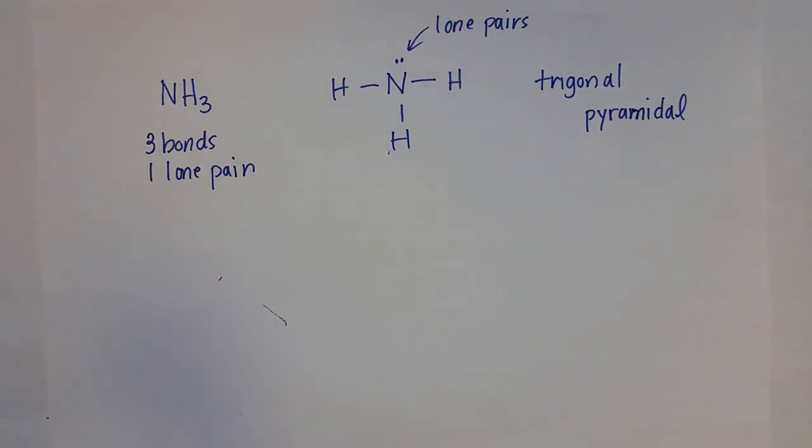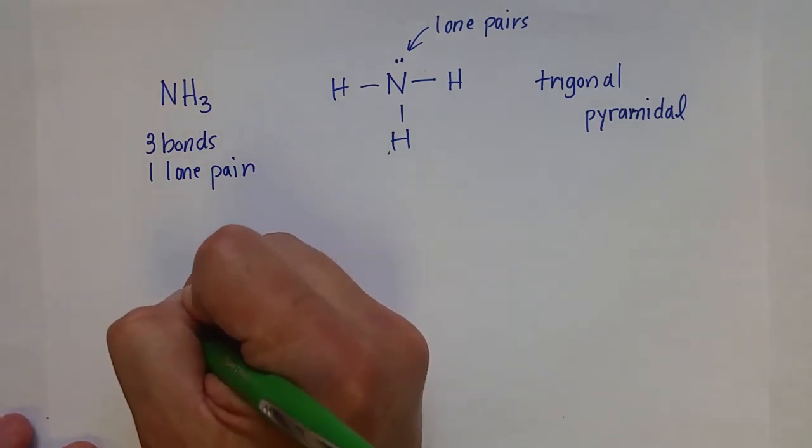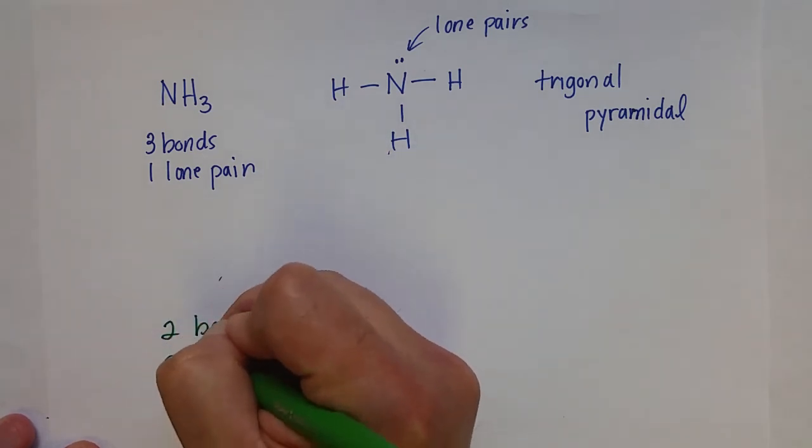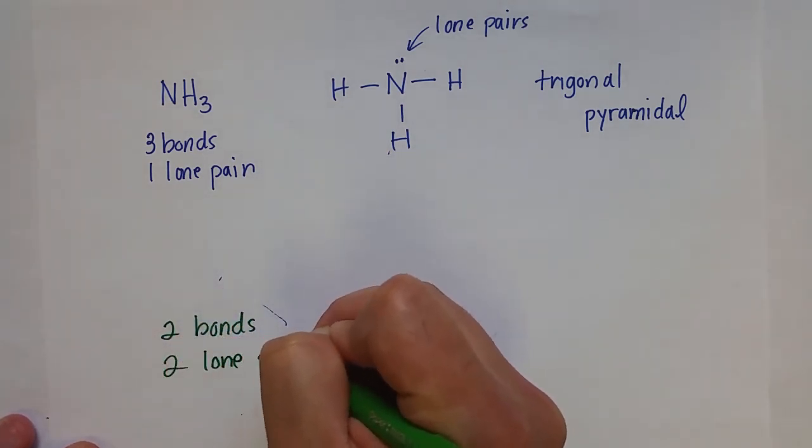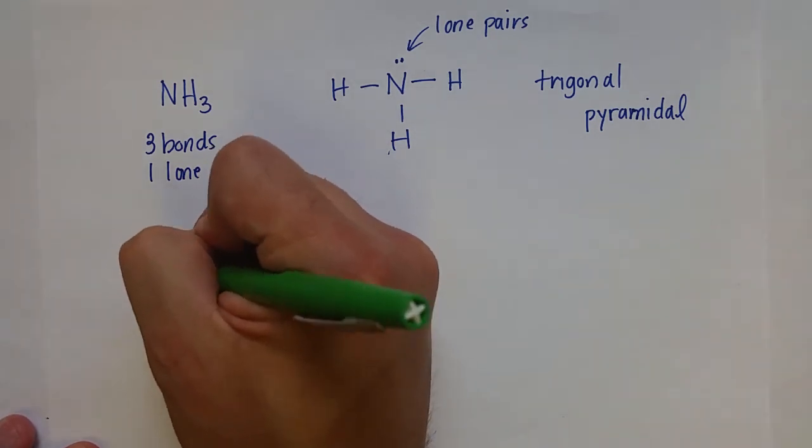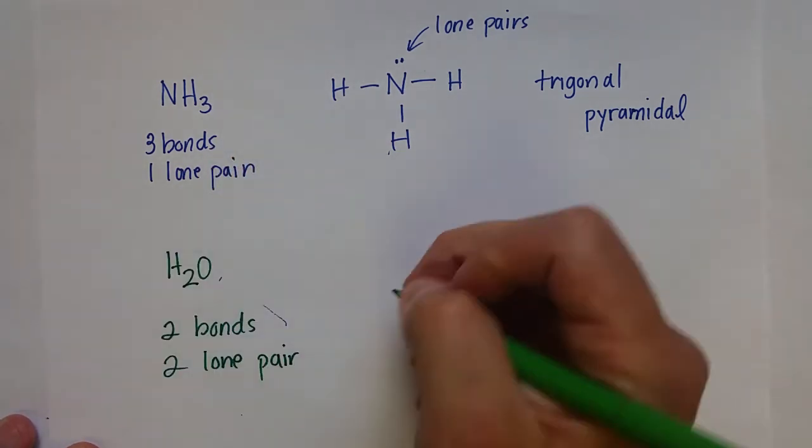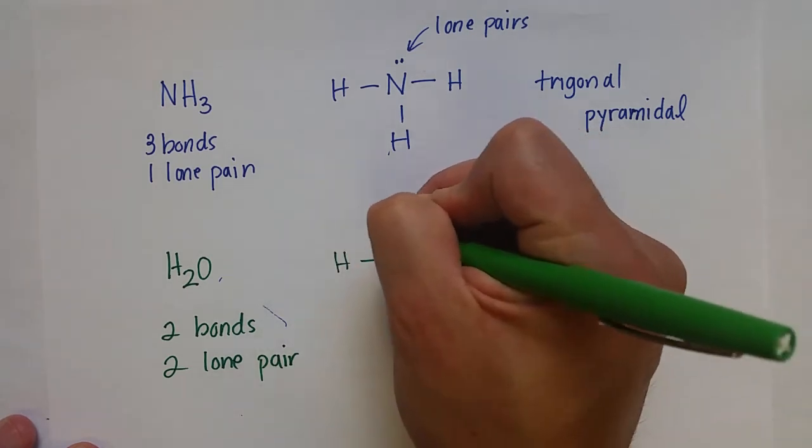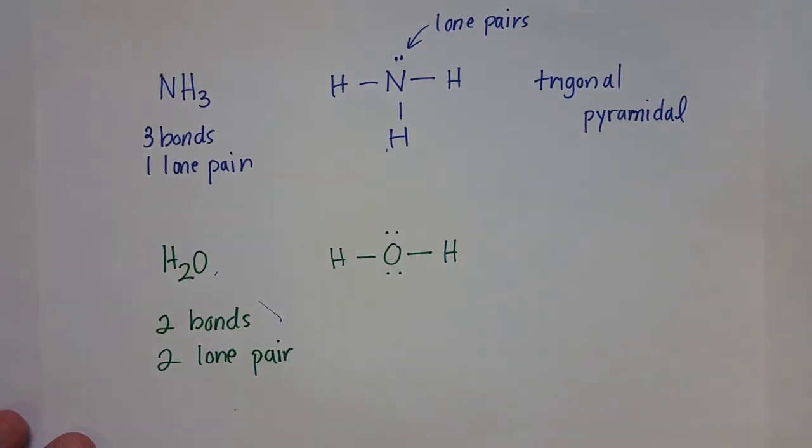Alright, so there's one other basic molecular geometry we should go over, and that is for molecules that have two bonds and two lone pairs. And, of course, the perfect example of a molecule like that is water. Oxygen has a single bond with each hydrogen atom, but also has two lone pairs.